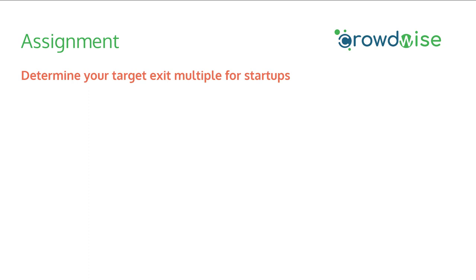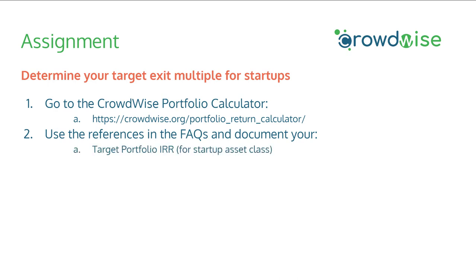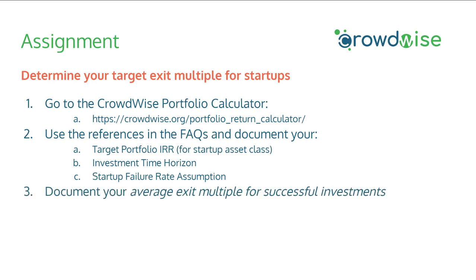Okay, let's get to the assignment for today. Determine what your target exit multiple must be for startups in your portfolio. Go to the Crowdwise portfolio calculator and use the references in the FAQs. Document your assumptions for your target portfolio IRR, the investment time horizon, and the startup failure rate assumption. See how adjusting time horizon, failure rates, or target IRR changes the types of companies you need to be screening for, and document your average exit multiple required for your successful investments.